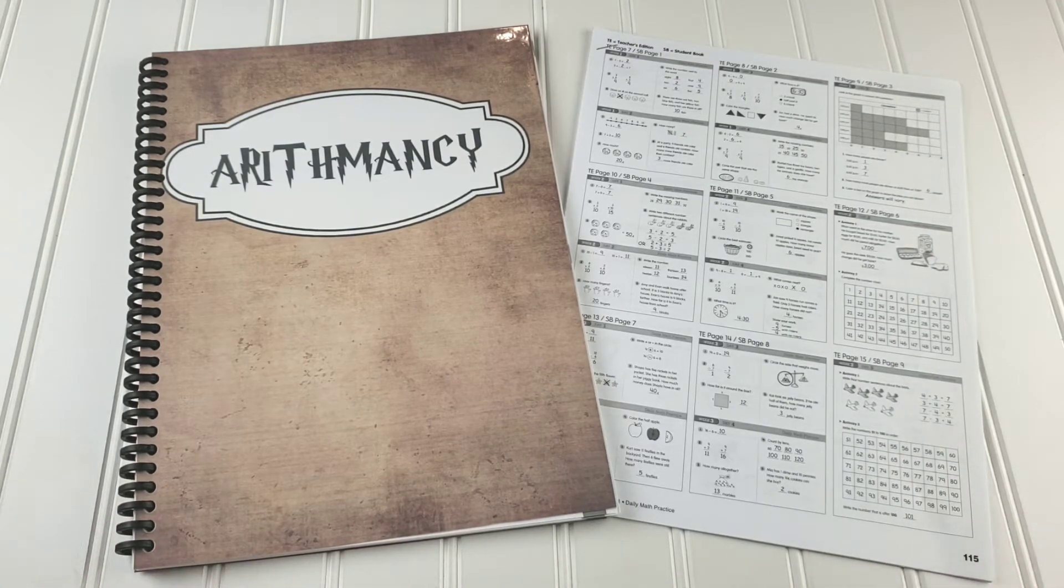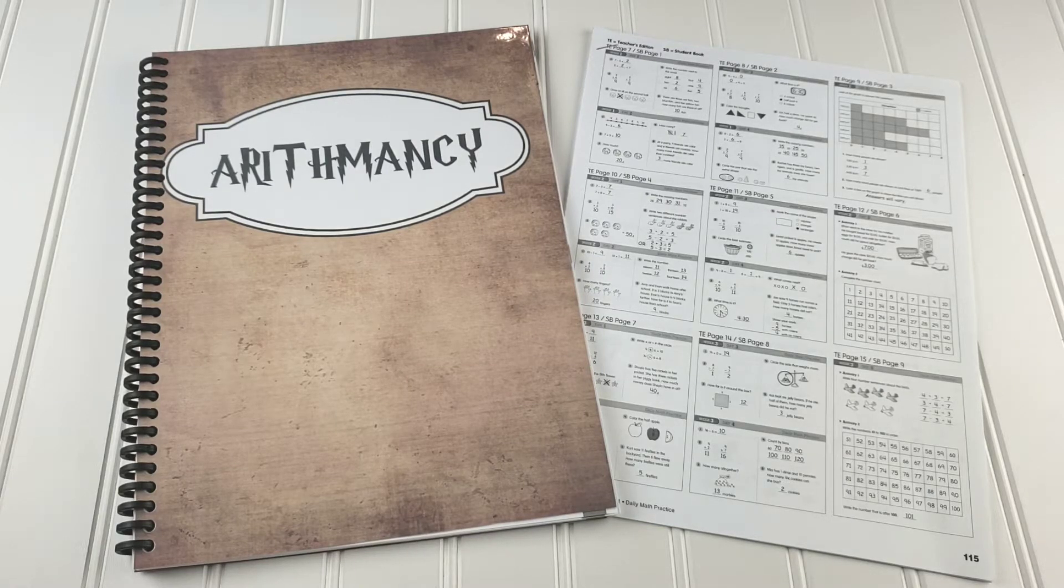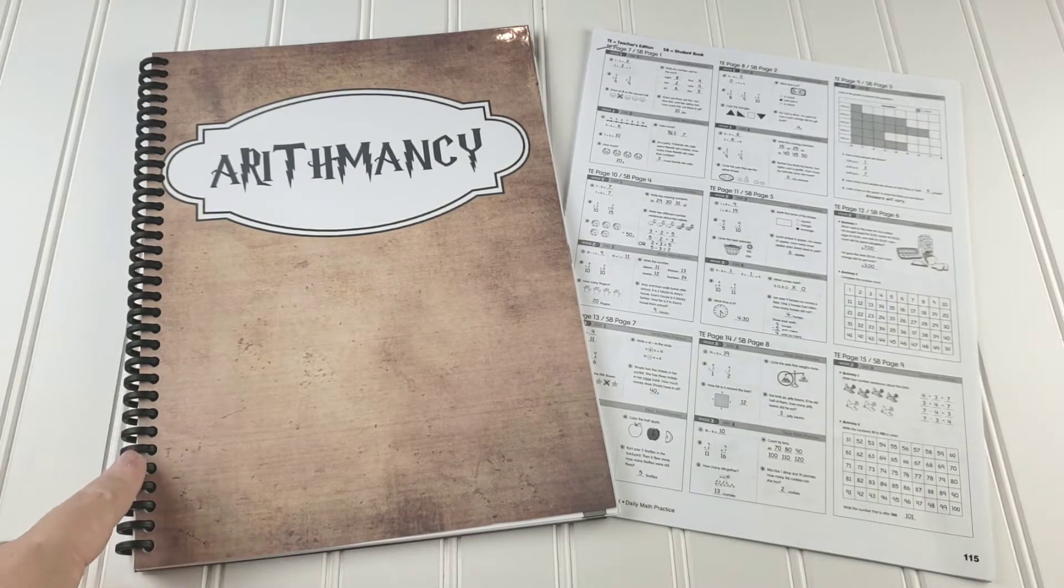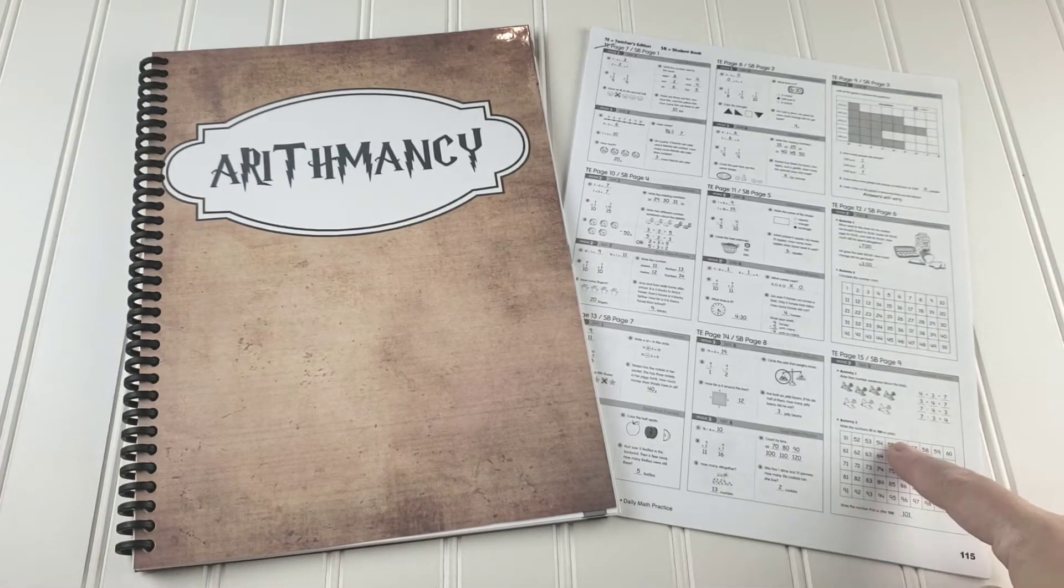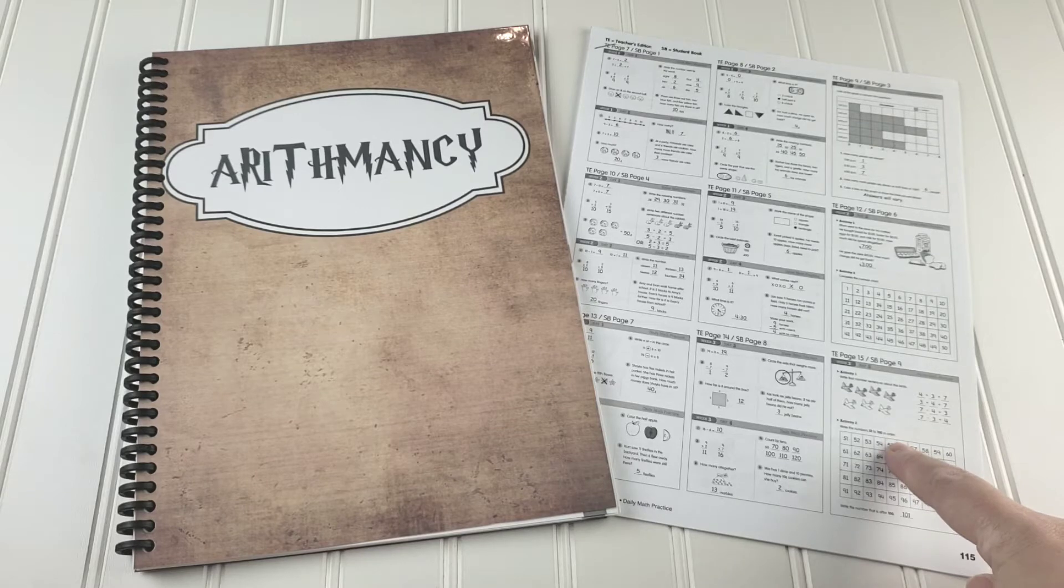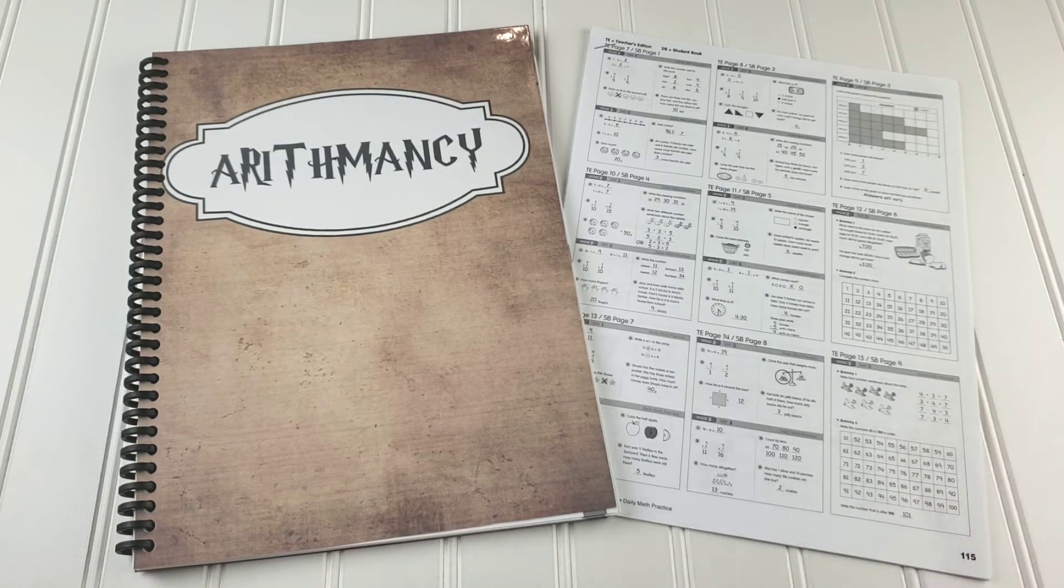So the first thing I did once I got the Evan Moore Daily Math Grade 2 book is ripped it apart. Emily really enjoys when things are spiral bound and I really enjoy when she does not have access to the answers. Now the book itself is meant to be reproducible for a teacher so I understand why it's all in one.